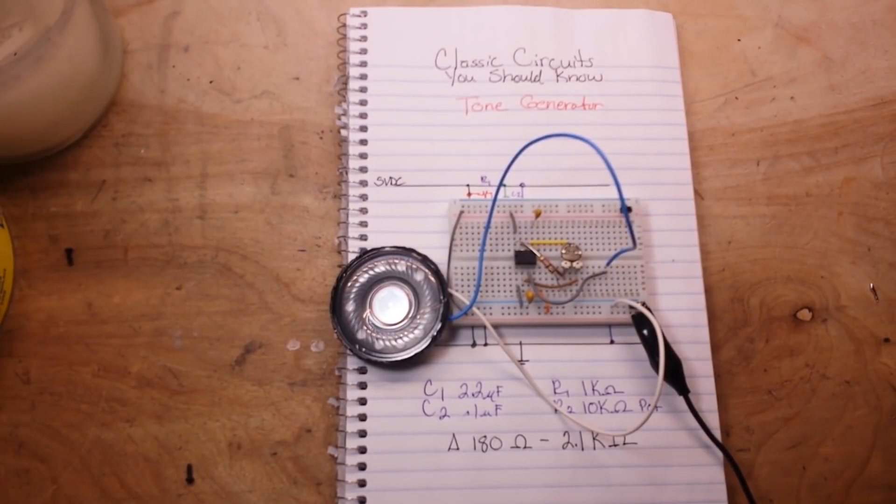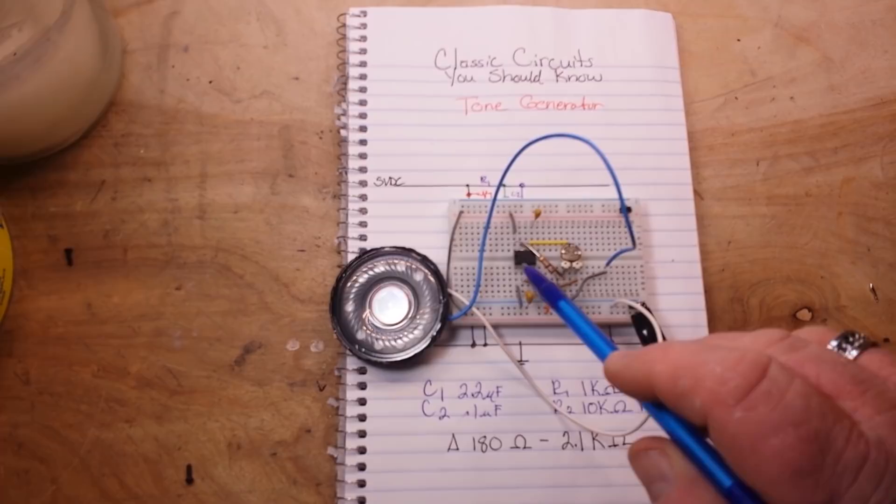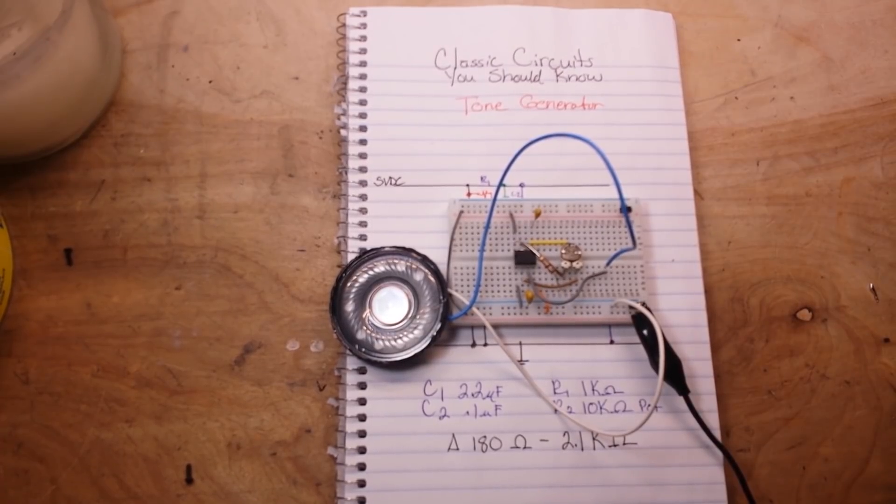Hey what's up guys, we are back again with another classic circuit you should know and this one is a tone generator. It's based off of a 555 timer so it is a form of an astable oscillator. Now if you're unsure of oscillators check out my oscillator playlist, I have a whole bunch of them in there.